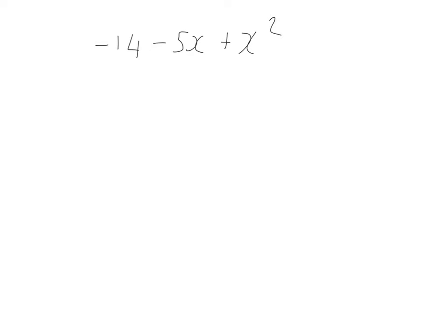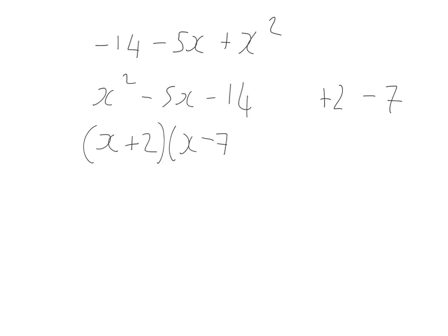Factorize minus 14 minus 5x plus x squared. No common factor. The expression is in an awkward order, so first rearrange into standard form: x squared minus 5x minus 14. Two numbers multiplying to give minus 14 and adding to give minus 5 — the negative tells me the signs are different. That's plus 2 and minus 7: 2 times minus 7 is minus 14, and 2 minus 7 is minus 5. So the answer is (x + 2)(x − 7).